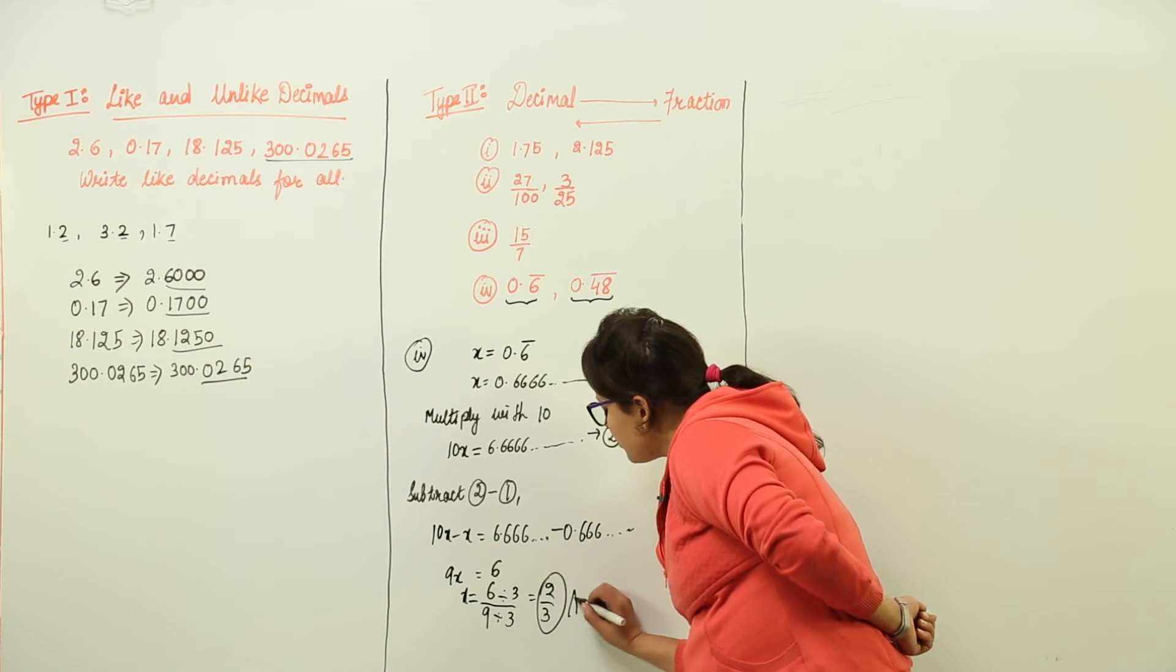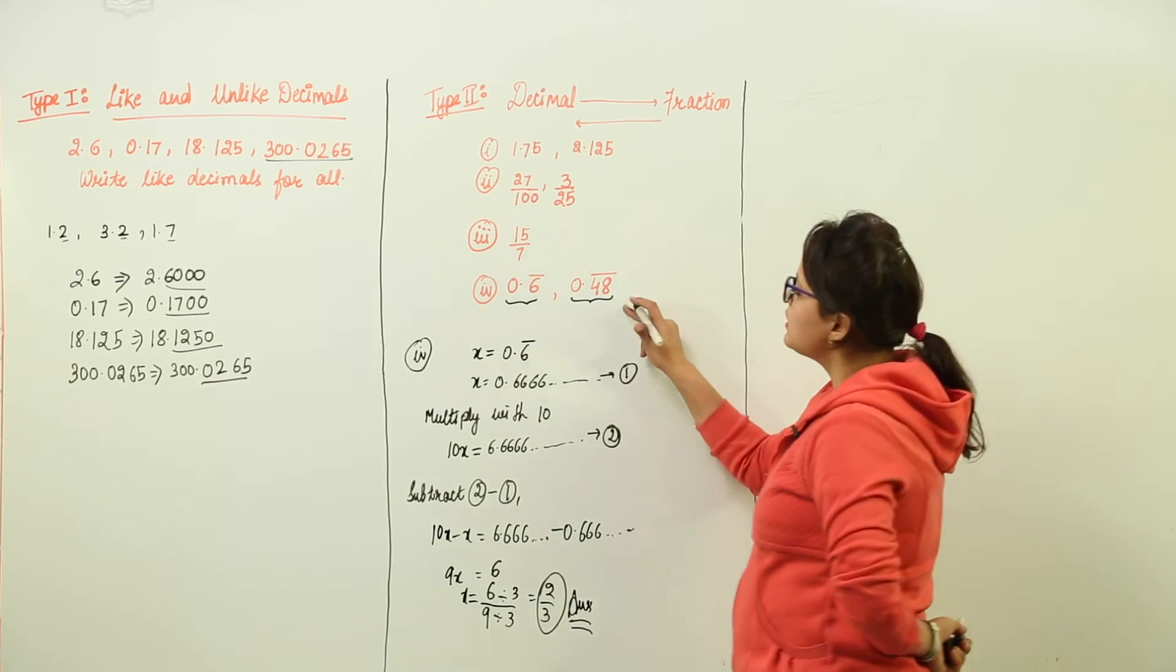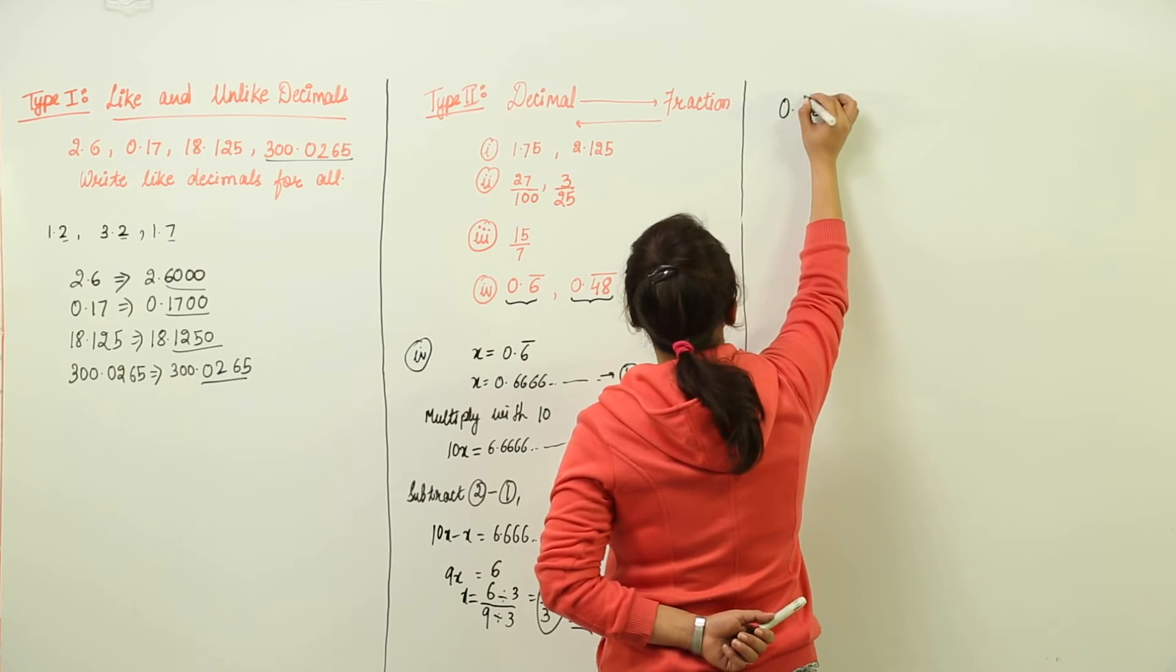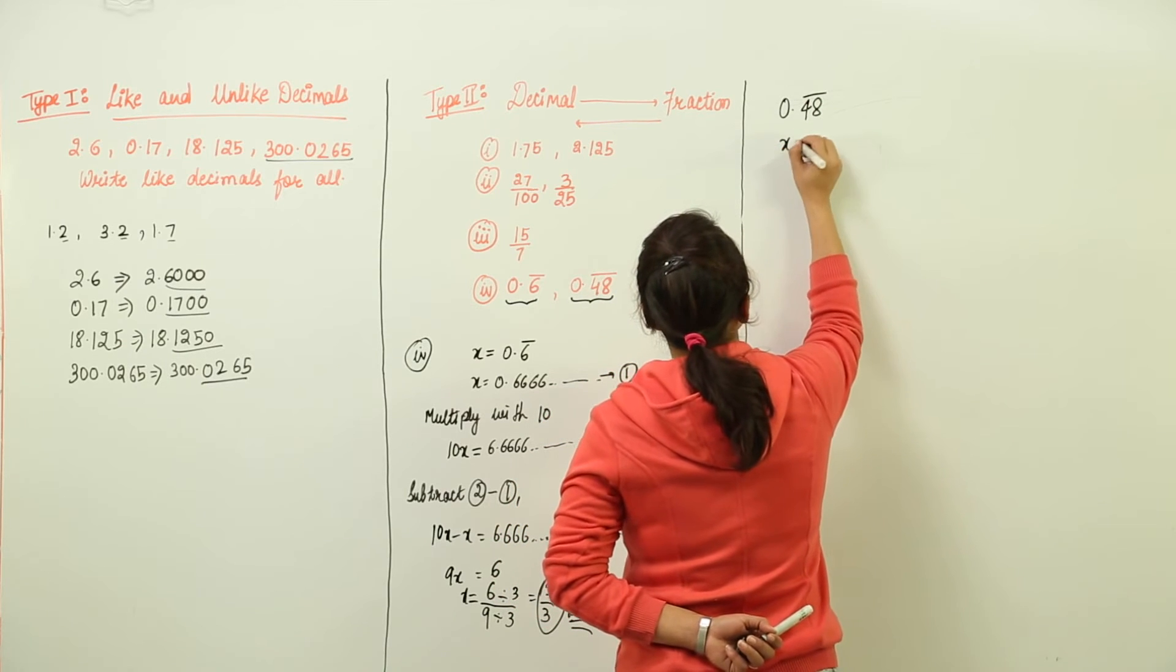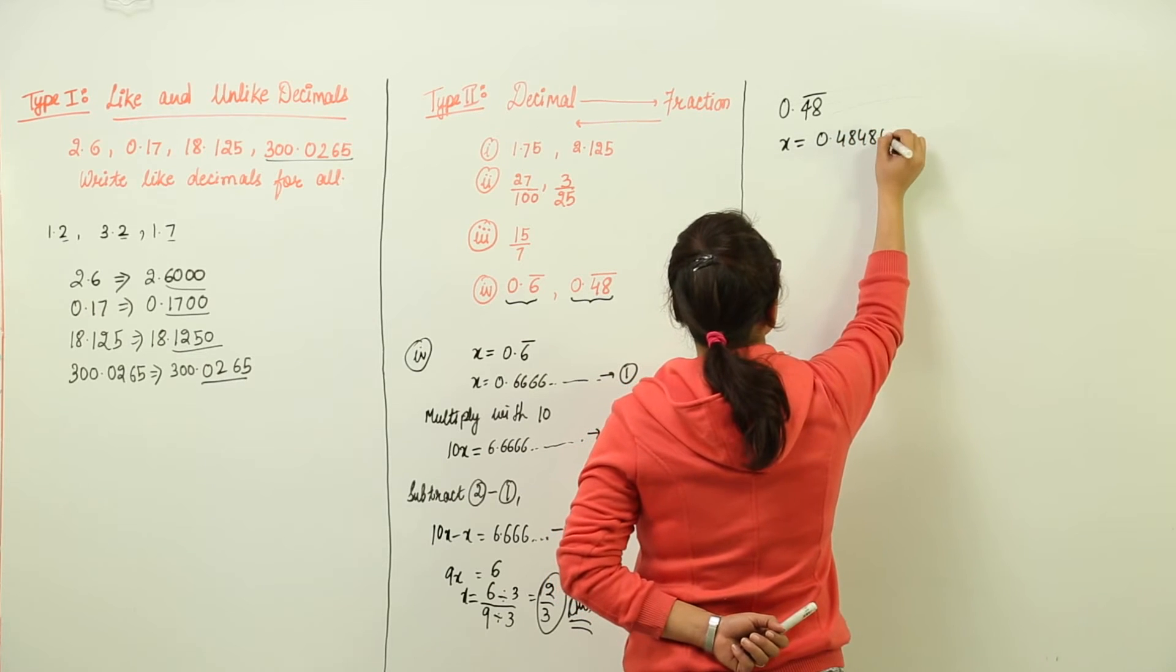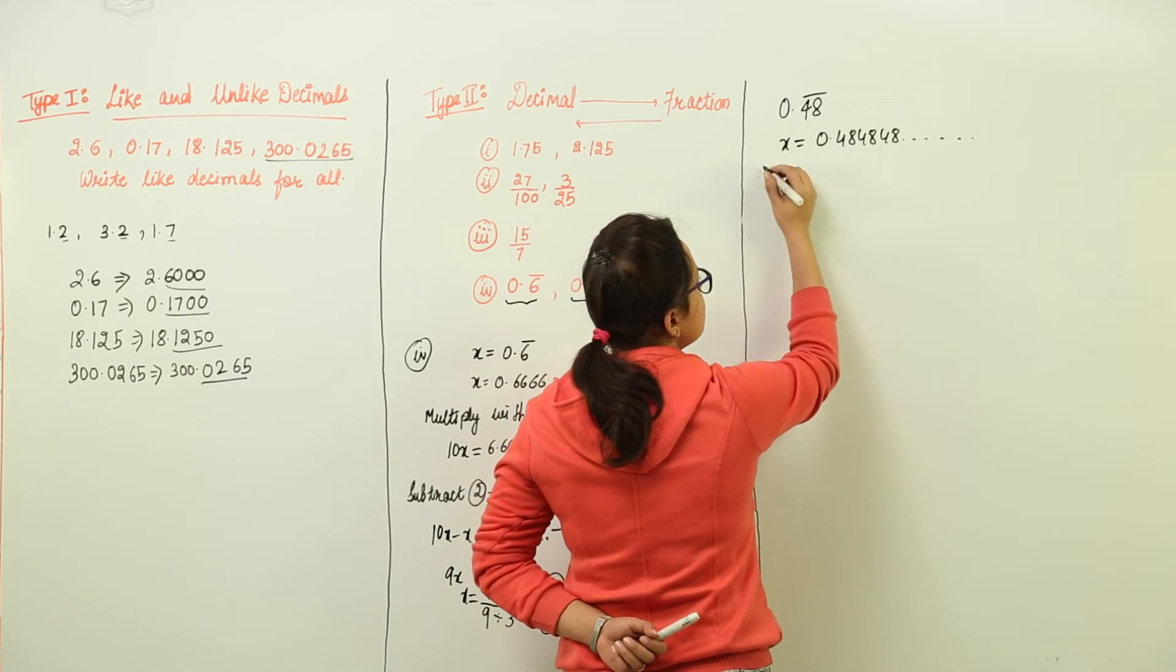So 2 upon 3 is the fraction for this decimal. Similarly, the last part is having 0.48 bar. Now the bar is on two digits. So how do we represent it?